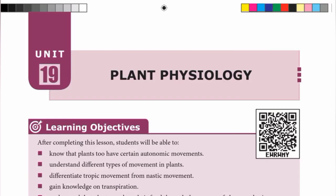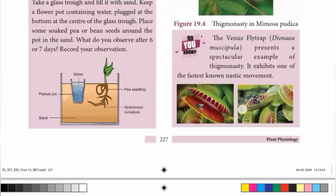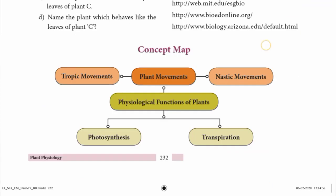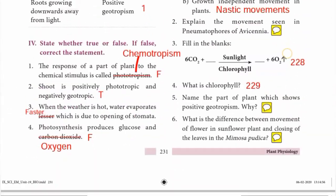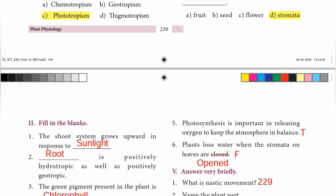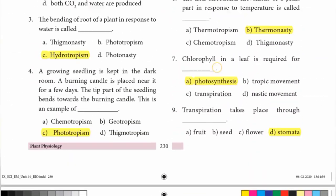Hi, welcome to our channel Student Station. If you want to subscribe, please subscribe. This video is 9th standard science, Unit 19 - Plant Physiology. This lesson's book back exercise is called page number 230.